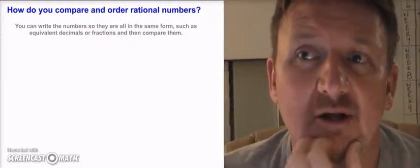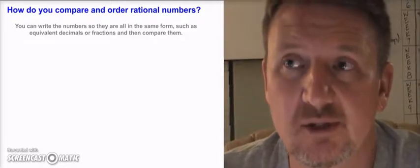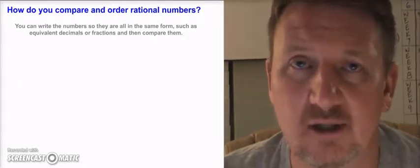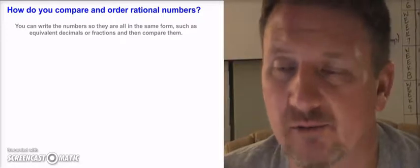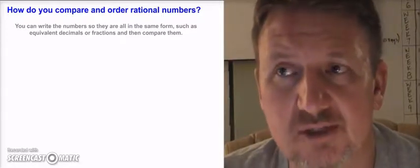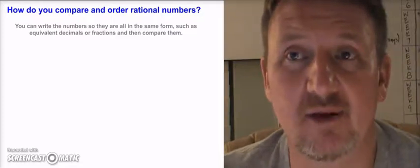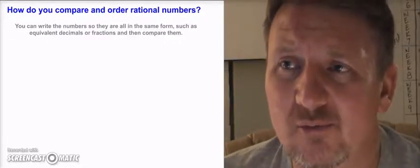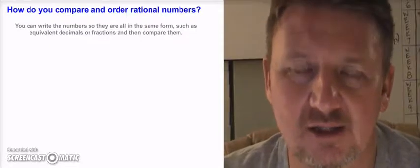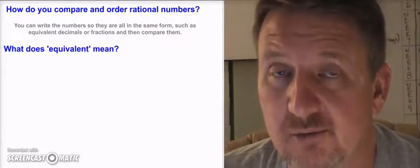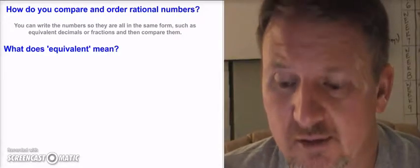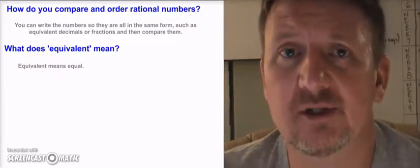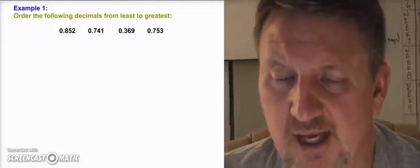One way to order and compare rational numbers is to write the numbers so that they are all in the same form, and that's really the best way to do this. You don't want to guess — if you're looking at a decimal and a fraction, let's put them all in the same form, whether they're all fractions or all decimals. My preference is all decimals — there are fewer steps. I'll show you both ways. Put them all in the same form such as equivalent decimals or fractions, then compare them. Equivalent just means that they're equal.